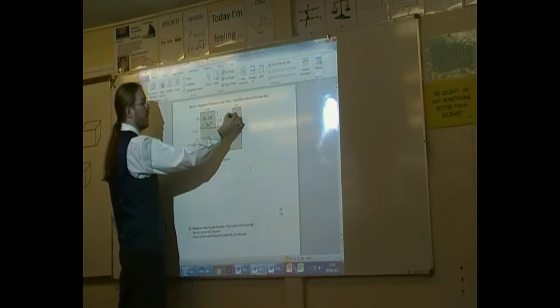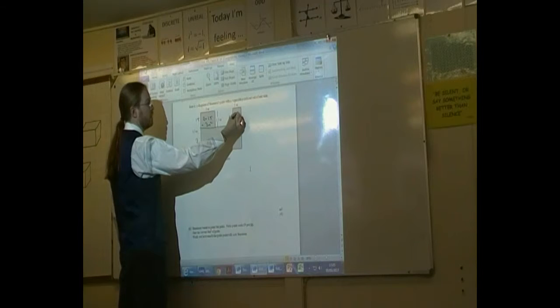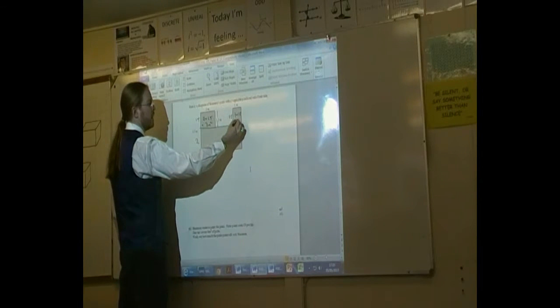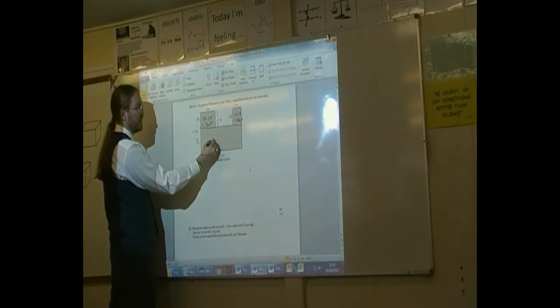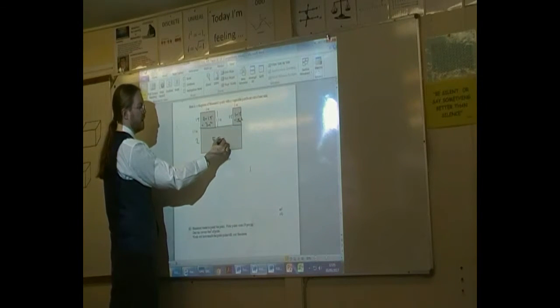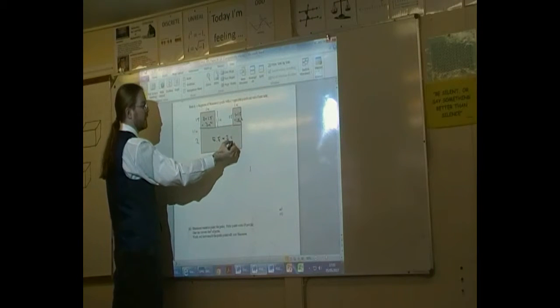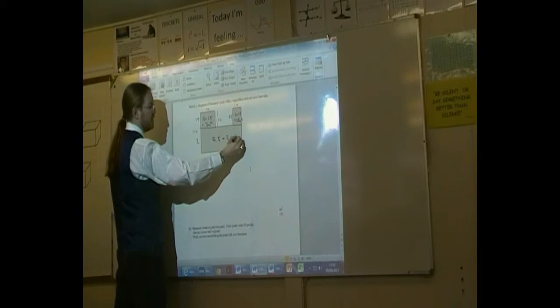Here we've got a base of 1, and a height of 1.5, so that is 1.5 metres squared. And here we've got a base of 5.5, and a height of 2, which gives us an area of 11 metres squared.